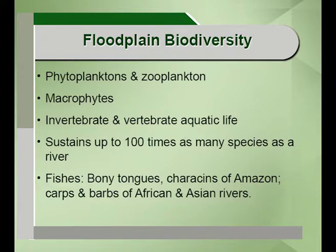The biodiversity contained in these systems includes the phytoplanktons and the zooplanktons. Planktons are basically drifting organisms — phyto indicates plant, so they are plant-like drifting organisms, or zoo, animal-like drifting organisms. The macrophytes, which are large enough to be seen by the naked eye, invertebrate and vertebrate aquatic life.